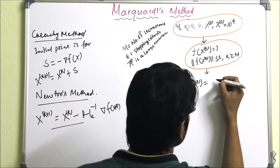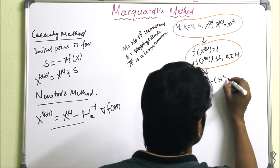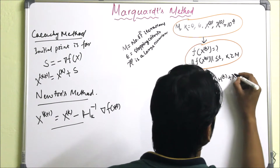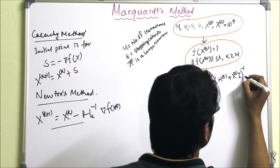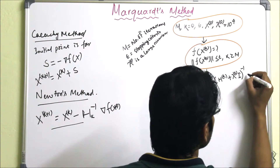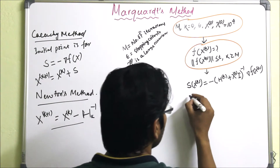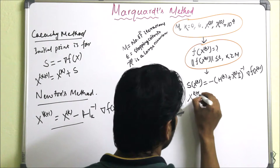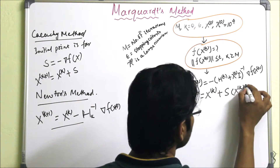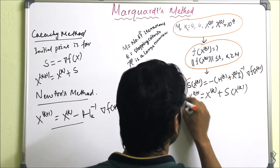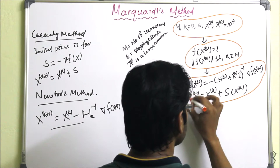Next, we find S(X_K), which is the negative of the inverse of the quantity H_K plus lambda_K times the identity matrix I, multiplied by the gradient of F(X_K). Then the next point is X_{K+1} = X_K + S(X_K). In this way, we find the next point using the previous point.